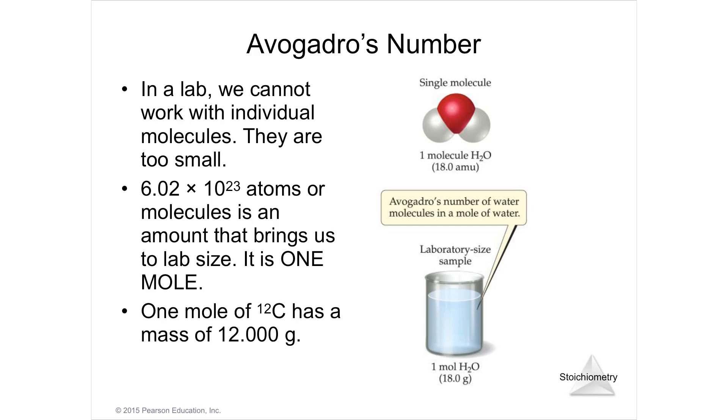Section 3.4, Avogadro's number and the mole. If I tell you that I'm going to buy you a dozen donuts, you can think in dozens because you know how to think in dozens, or if you would rather think in donuts, you could convert that into 12 donuts.